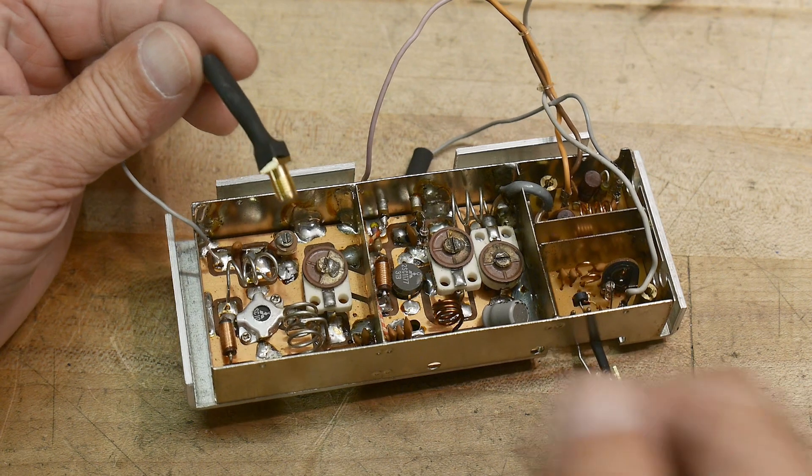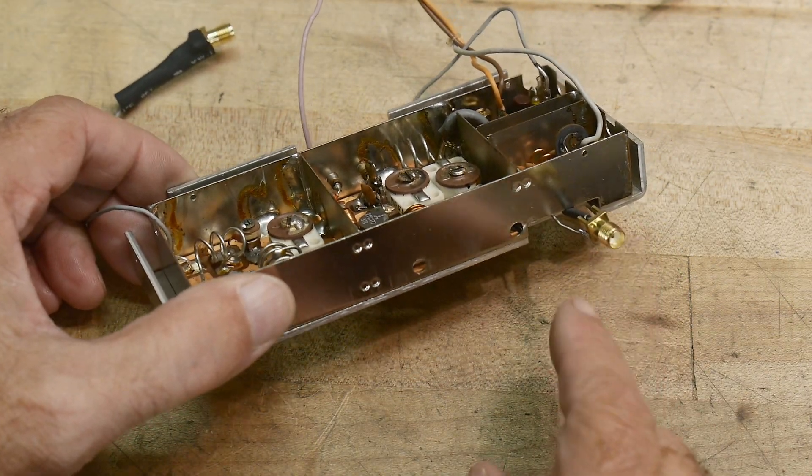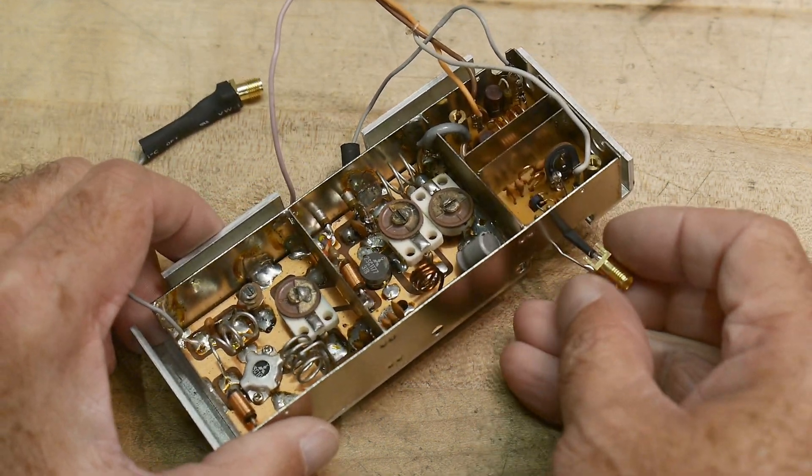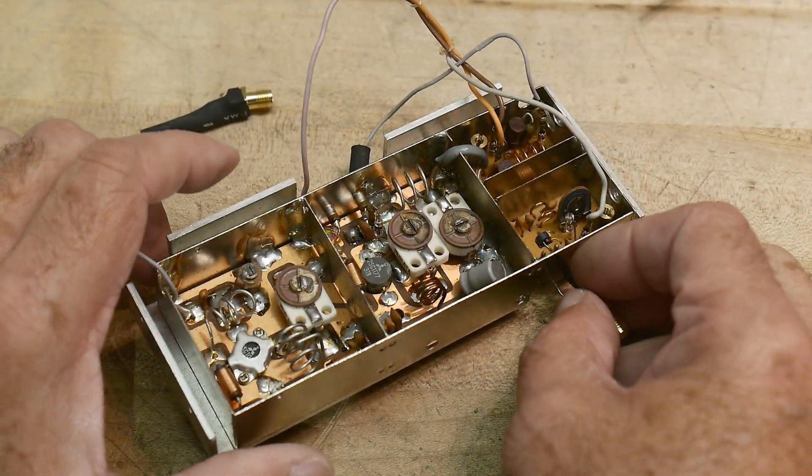I'll show that in a bit here, but I've figured out where everything is. So this is the input. I put an SMA connector on the input, and the output is over here. This got connected directly to a connector on the back of the radio, so I have a little connector on that.